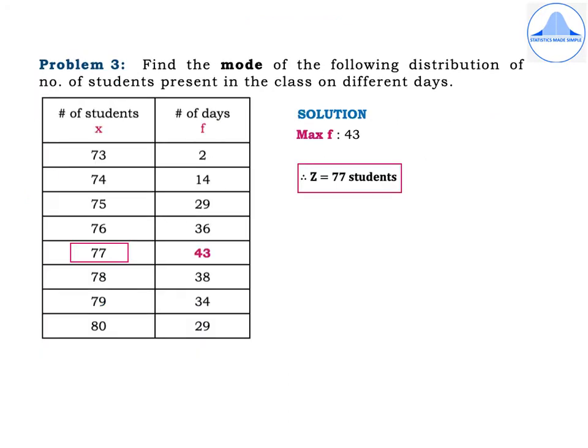Problem 3: Find the mode of the distribution of the number of students present in class on different days. Number of students: 73, 74, 75, 76, 77, 78, 79, 80. Number of days: 2, 14, 29, 36, 43, 38, 34, 29. Solution: The given data is discrete. Mark the first column as x and the second as f. The maximum frequency is 43, and the corresponding x value is 77. Therefore Z = 77 students.